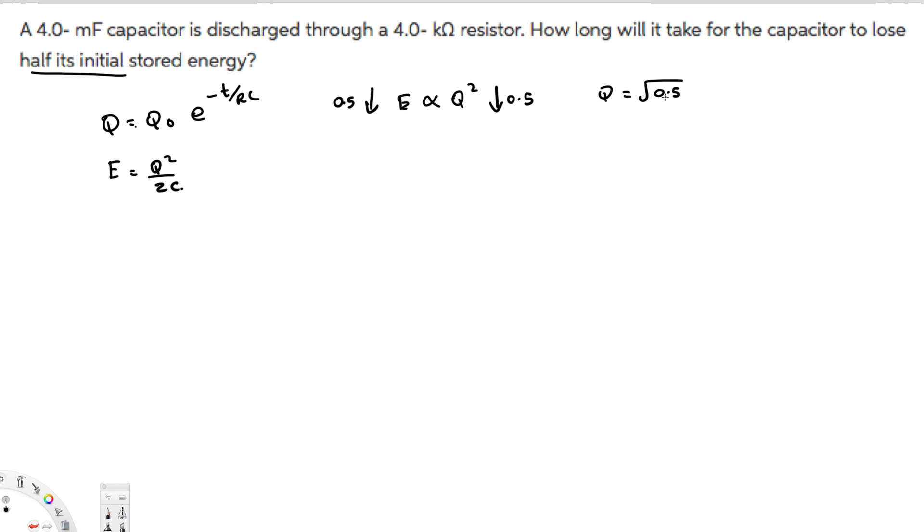We can directly write: square root of 0.5 equals e to the power minus t over RC. This is the relationship.